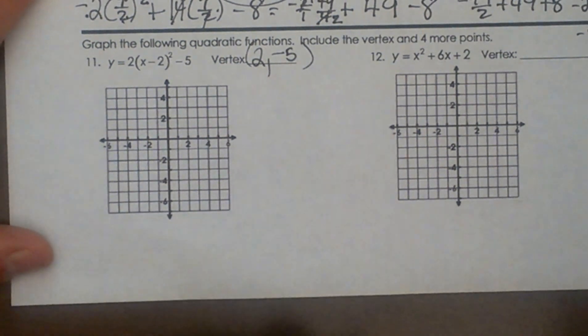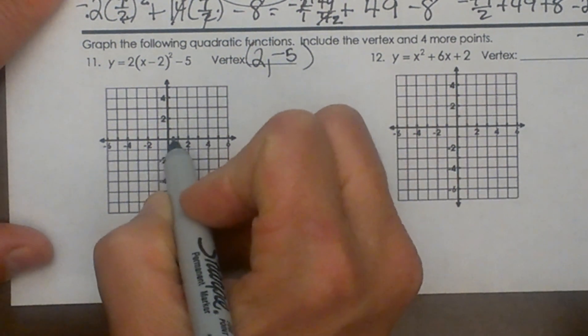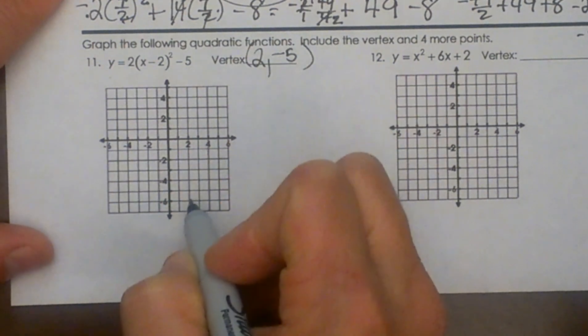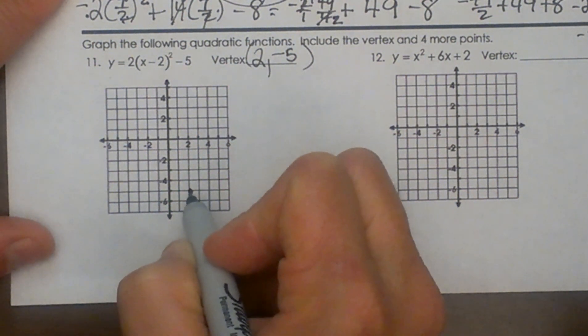Now what I'm going to do is I'm going to plot that point. Well that point is at 2, negative 5 which puts me right here.